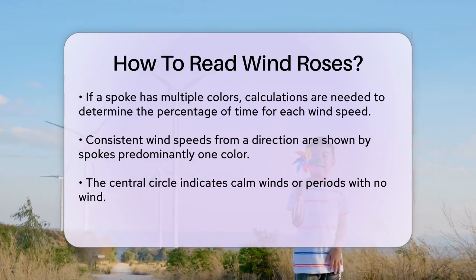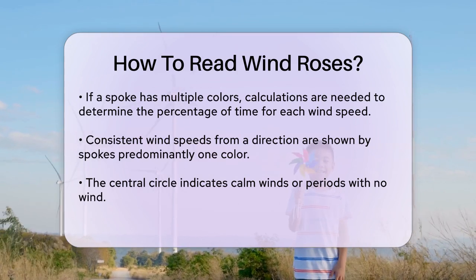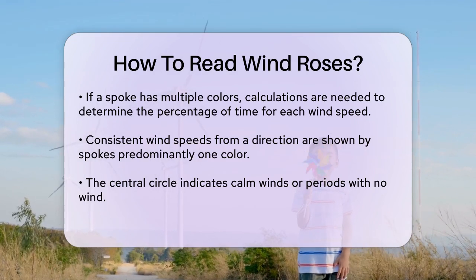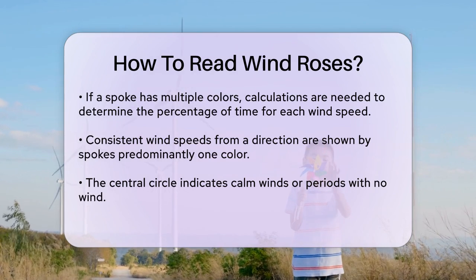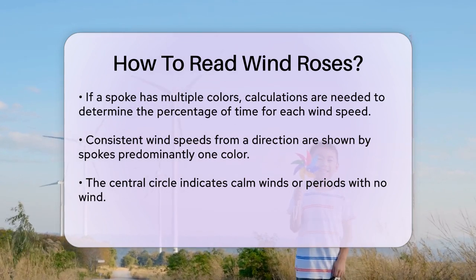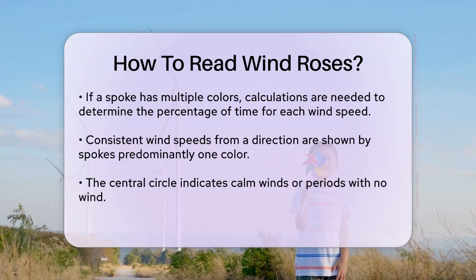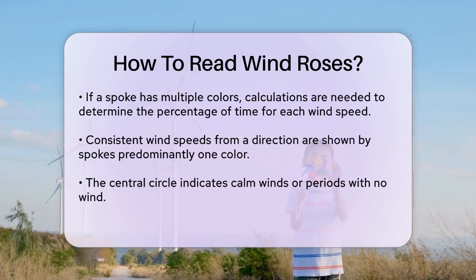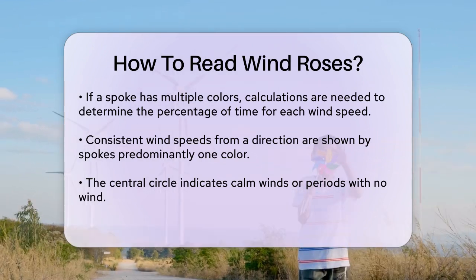The colors and lengths of the spokes work together to give you a clear picture. If a spoke is mostly one color, it means the wind speed was consistent from that direction. If there are multiple colors, it indicates varying wind speeds. The circle in the center of the wind rose represents calm winds, or times when there was no wind at all. If this circle is small or non-existent, it means there were no calm periods during the observed time frame.